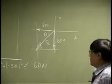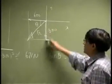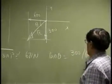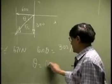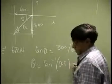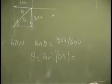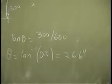From this diagram, you get tangent theta. That is this height which is 300 divided by the base which is 600. So theta will be tangent inverse 0.5 and the actual number here is 26.6 degrees.